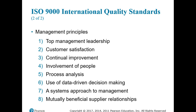The ISO 9000's eight quality management principles are: (1) top management leadership, (2) customer satisfaction, (3) continual improvement, (4) involvement of people, (5) process analysis, (6) use of data-driven decision making, (7) a systems approach to management, and (8) mutually beneficial supplier relationships.